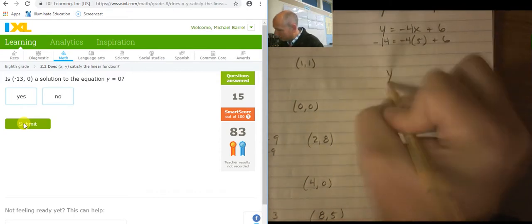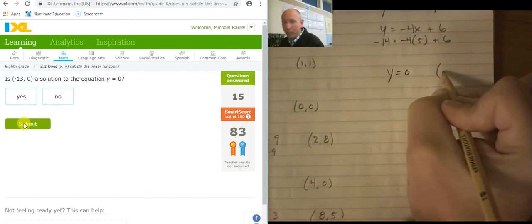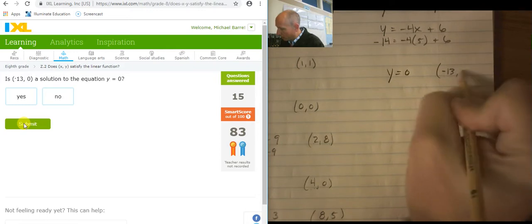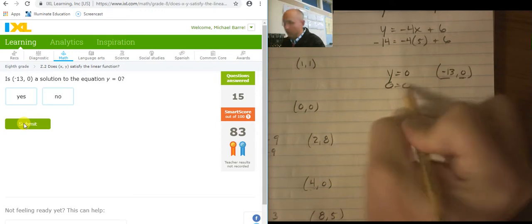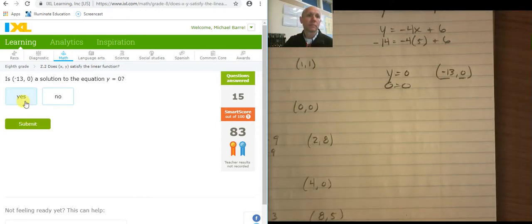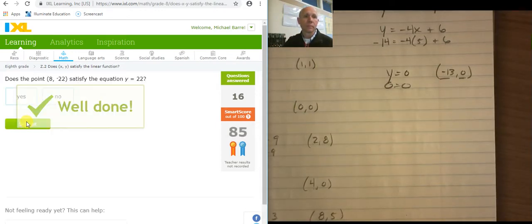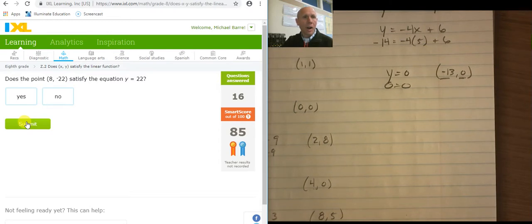So, y equals 0. And what am I plugging in? I'm plugging in negative 13 comma 0. So, there is no x to plug in, but there is a y. So, plug in y. 0 equals 0. It's true. Y. Plugging in y. Negative 22 equals 22. No. Similar to the one I just did.